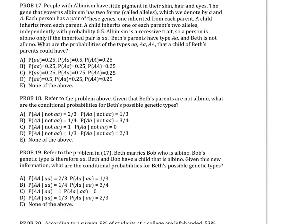Okay, for problems 17, 18, and 19, a child inherits one of each parent's two alleles independently with probability 0.5. An allele can be either A or lowercase a. So what are the possibilities for a child of Beth's parents? Well, one parent has AA and the other parent has A and little a.